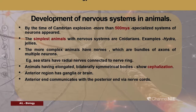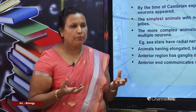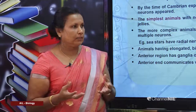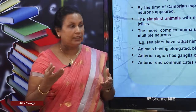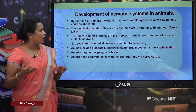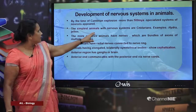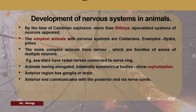The evolution of the nervous system occurred more than 500 million years ago with the Cambrian explosion — the sudden appearance of many different groups of organisms in the seas. Specialized systems of nerves appeared in this period. The simplest animals with nervous systems are cnidarians, for example hydra and jellies. More complex animals have nerves which are bundles of axons from multiple neurons; for example, sea stars have radial nerves connected to nerve rings.